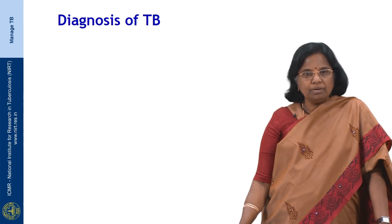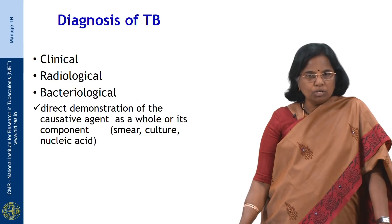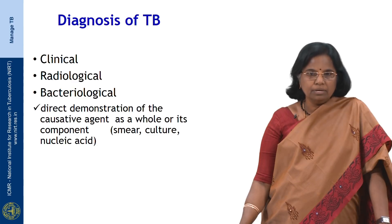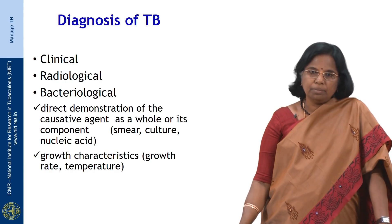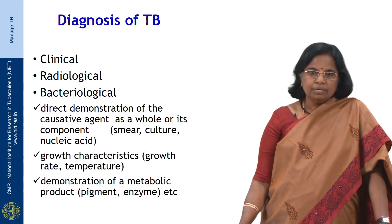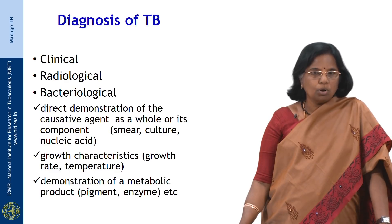Diagnosis of TB can be done based on clinical findings, radiological findings, or bacteriological findings through direct demonstration of the causative agent as a whole or its component — for example, the smear, culture, or nucleic acid — or by means of growth characteristics such as growth rate determination or temperature requirement, or by demonstration of a metabolic product such as a pigment or an enzyme.